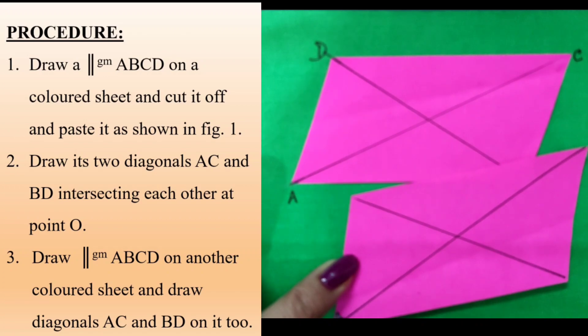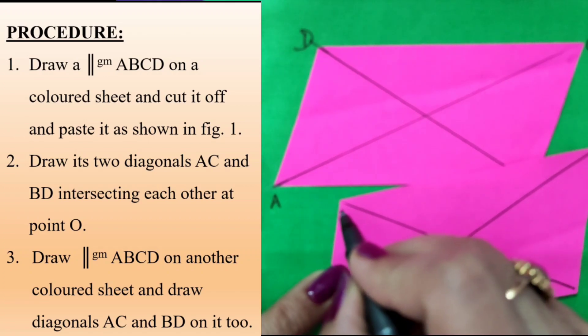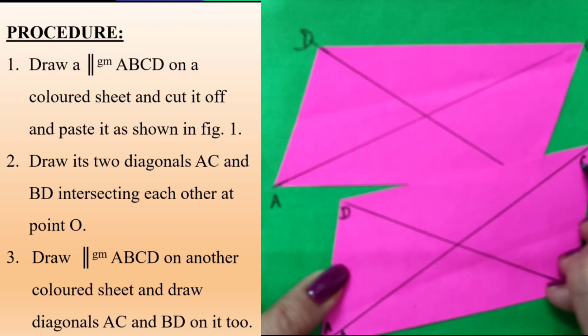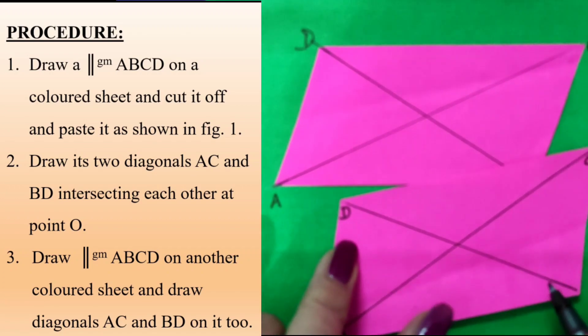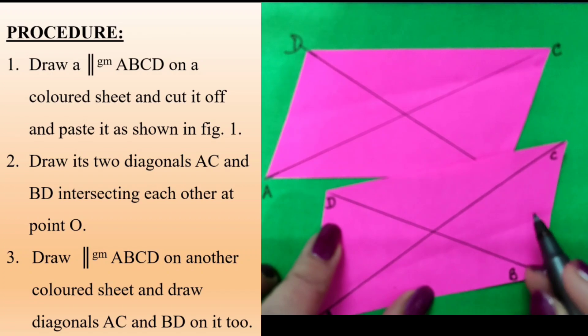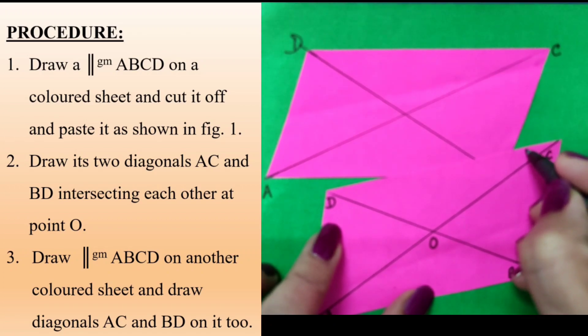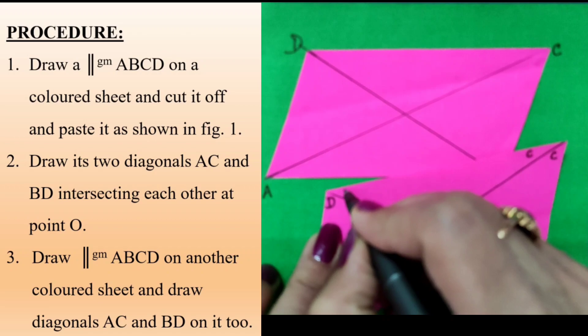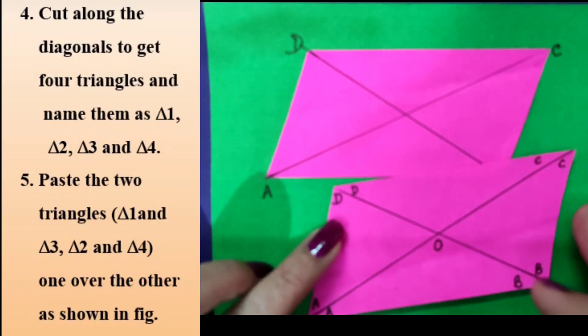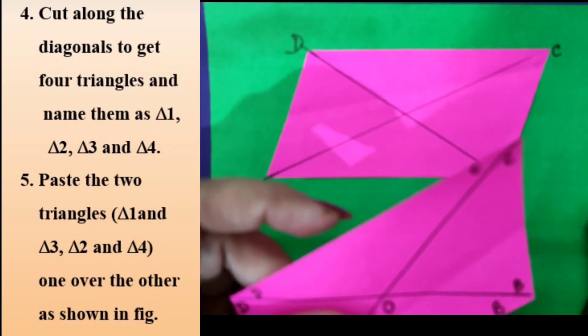Let me do the marking. This is vertex A, this is vertex D, this is vertex C, and this is vertex B. I mark the point of intersection of diagonals as O. This is vertex B, C, D, and A. Now I will cut it along the diagonals.